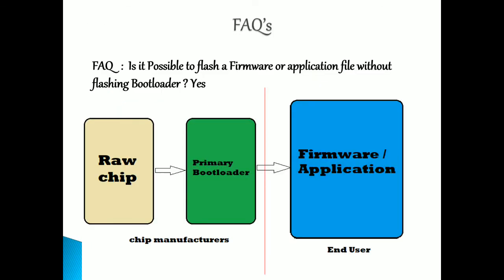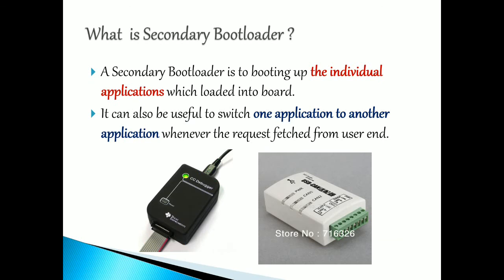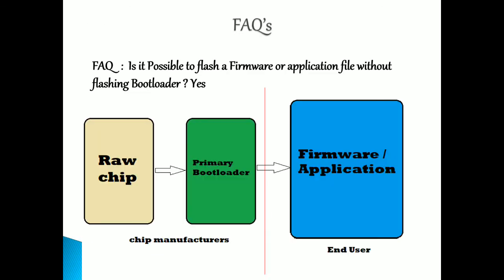Now a frequently asked question: what happens if there is no secondary bootloader? If you flash the primary bootloader and then directly flash the application on top of it without a secondary bootloader, the application will work fine and everything will run correctly — but the only problem is that if you want to flash the application again or change any calibration values, you cannot do so easily.